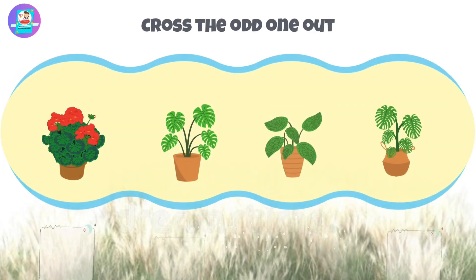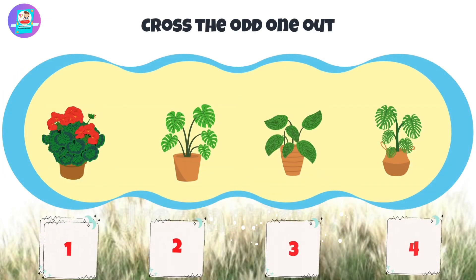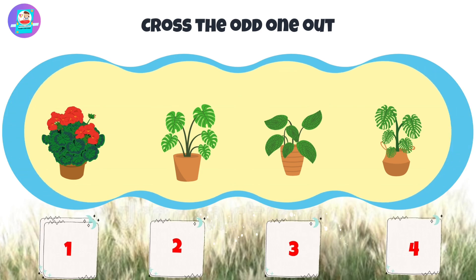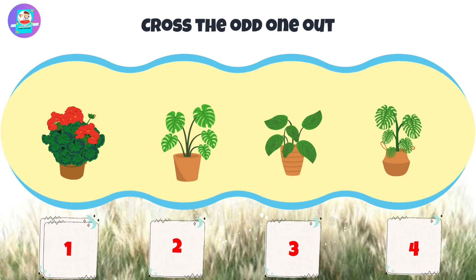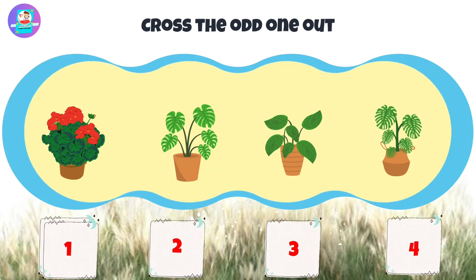Okay, next, there are 4 pictures: 1, 2, 3, 4. Put the odd one out.